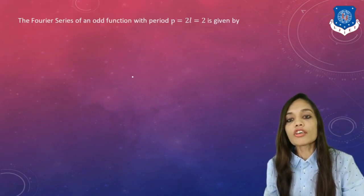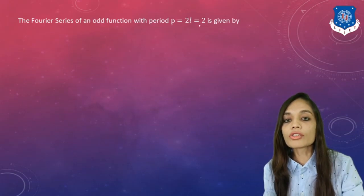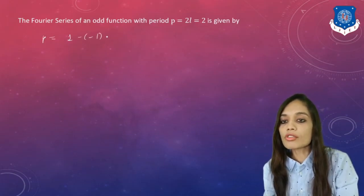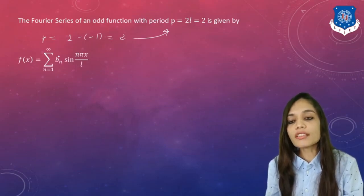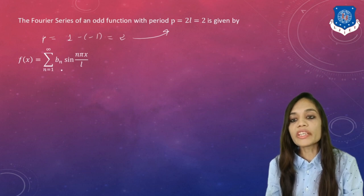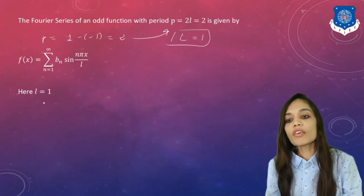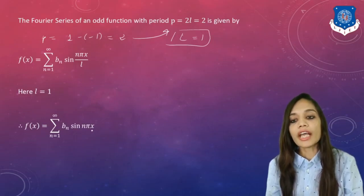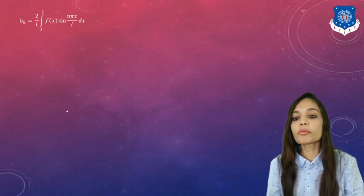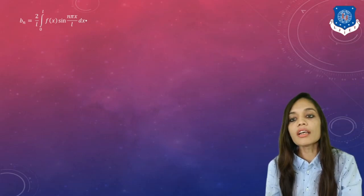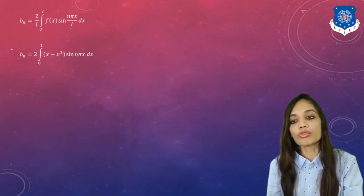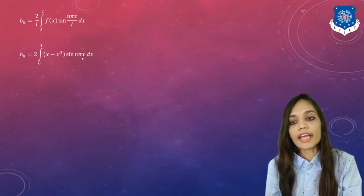Before finding Bn, we find L. Here P = 1 − (−1) = 2, so L = 1. The Fourier series is f(x) = Σₙ₌₁^∞ Bn·sin(nπx), with L = 1. Bn = (2/L)∫₀ᴸ f(x)sin(nπx/L)dx. Substituting L = 1 gives Bn = 2∫₀¹ (x − x³)sin(nπx)dx.